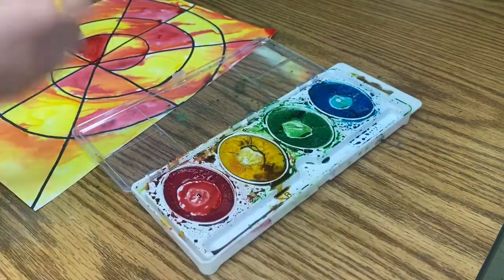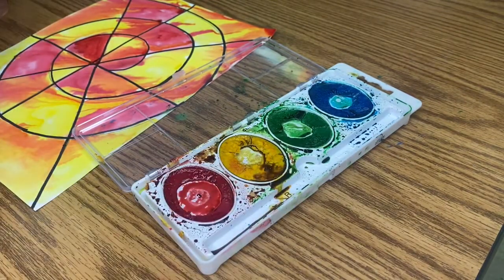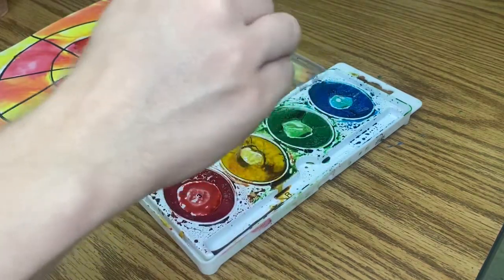All right, now I want to do some yellow. Can I just go right into the yellow? No, it's going to mess up the paint. Dip, let it drip, dry off, and then go in and paint.